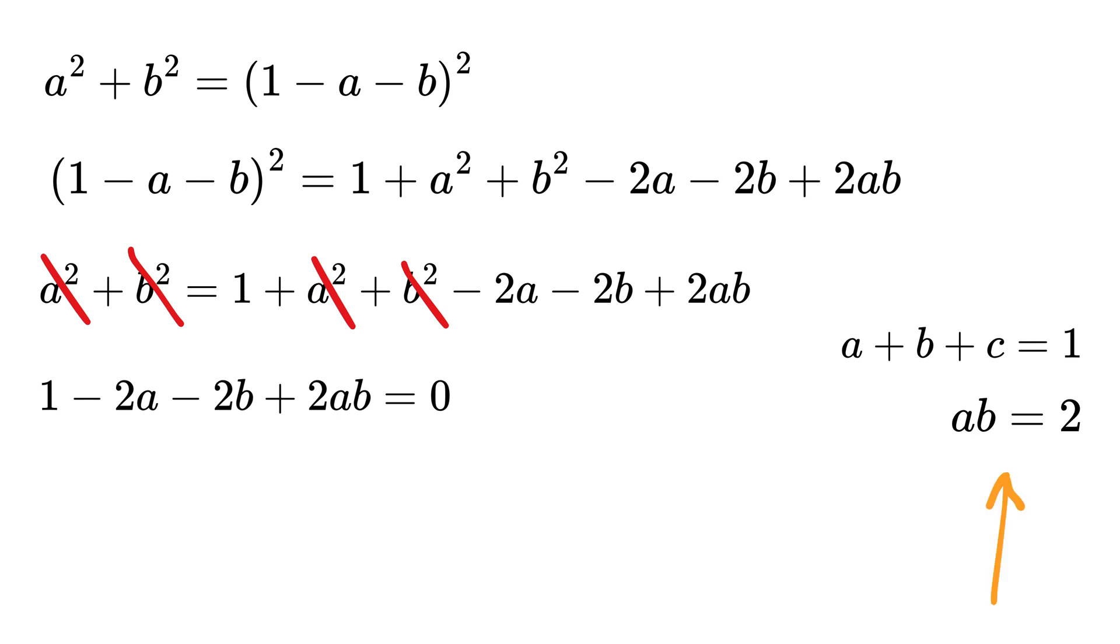But from here we have A times B is equal to 2. So we plug that in, and we get 1 minus 2 times A minus 2 times B plus 4 equals 0, or 5 minus 2 times A minus 2 times B equals 0.